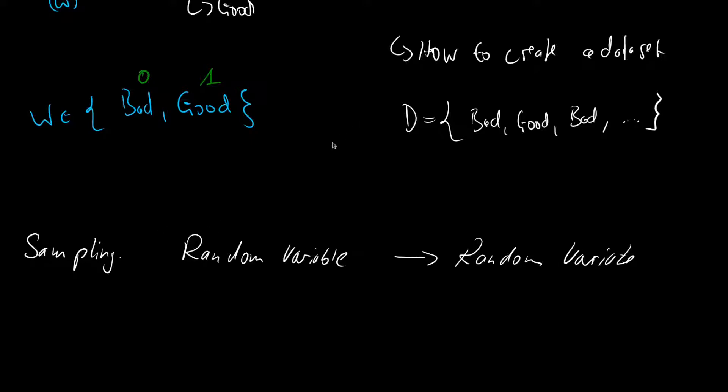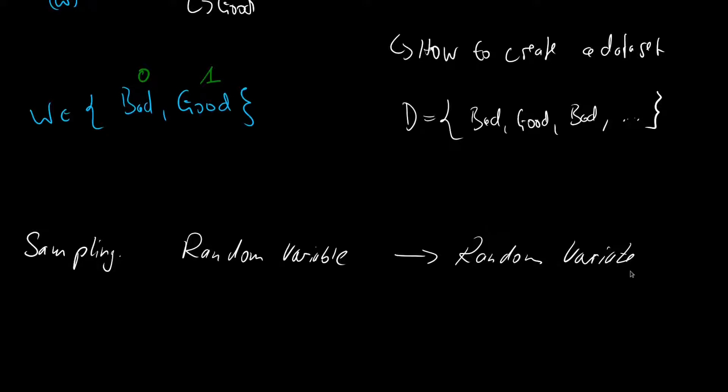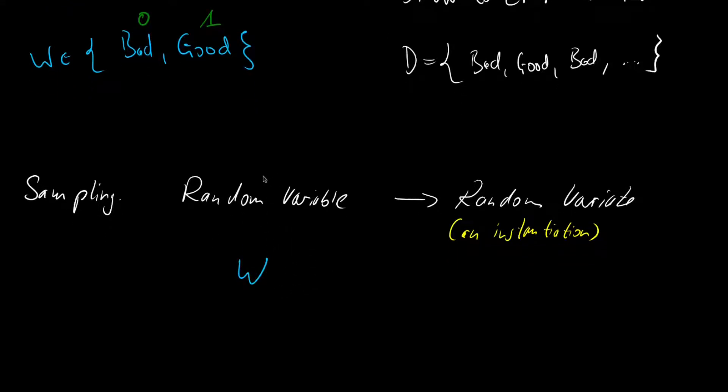So the random variable is what we looked at with the weather. So a variable that can either take two values or is some sort of randomized. And the random variate is an instantiation of those random variables. For instance, if you observe the weather and it is bad or good. So it is an instantiation. And usually we also differentiate between the two by using a capital letter for the random variable and a lowercase letter for the random variate.